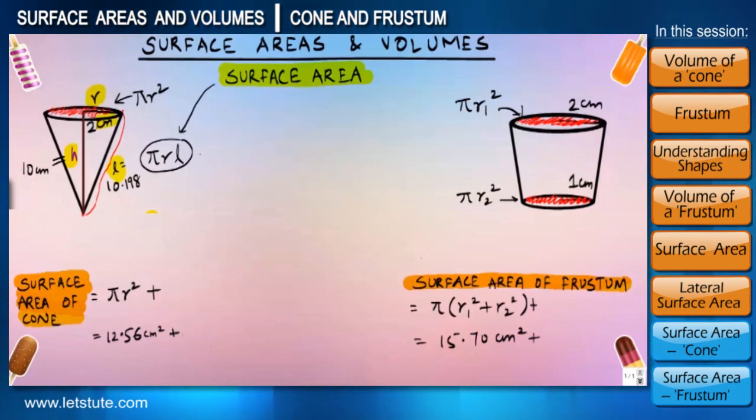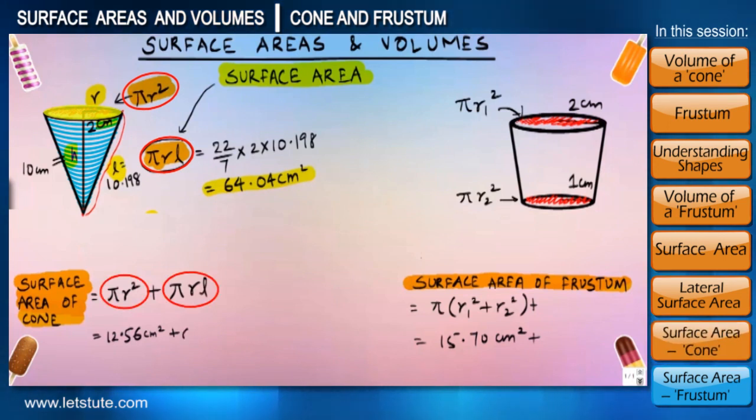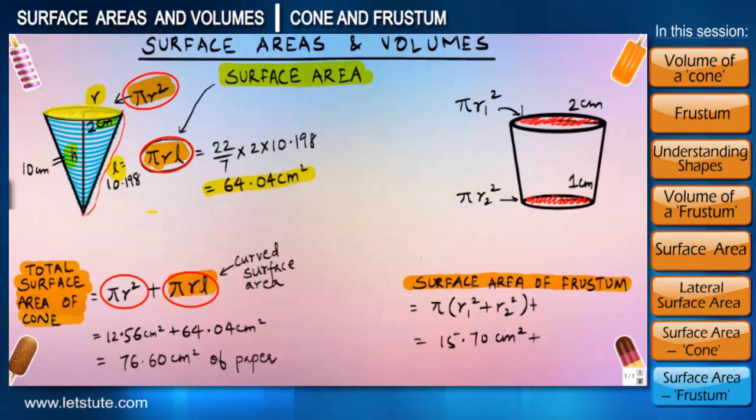The slant height will come out to be 10.2 centimeter in this case, and then eventually we can use the slant height for calculating the curved or lateral surface area, which will come out to be 64.04 centimeter square. That means for covering an entire cone, we need 64.04 plus 12.56 centimeter square of paper, which will come out to be 76.60 centimeter squares. So combining the area of upper circle and the lateral surface, we can get the total surface area of a cone.